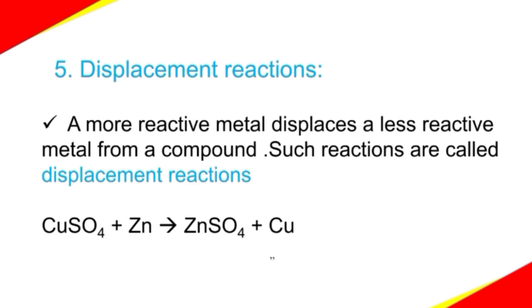Reactions in which a more reactive metal displaces a less reactive metal from a compound are called displacement reactions. A more reactive metal displaces a less reactive metal from a compound. Such reactions are called displacement reactions. Here we go with an example. Copper sulfate plus zinc gives zinc sulfate plus copper. What happened in this reaction is copper is displaced by zinc. How does zinc displace copper? Basing on the metal reactivity series, zinc is more reactive than copper. Hence, copper is displaced by zinc.